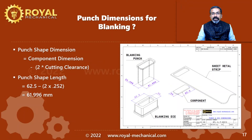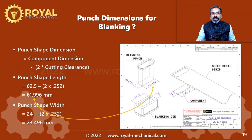Now let's calculate the punch dimensions. The length of the punch equals the component length minus 2 times the cutting clearance: 62.5 minus 2 × 0.252, which equals 61.996 mm. The width of the punch equals the component width minus 2 times the cutting clearance: 24 mm minus 2 × 0.252, which equals 23.496 mm.